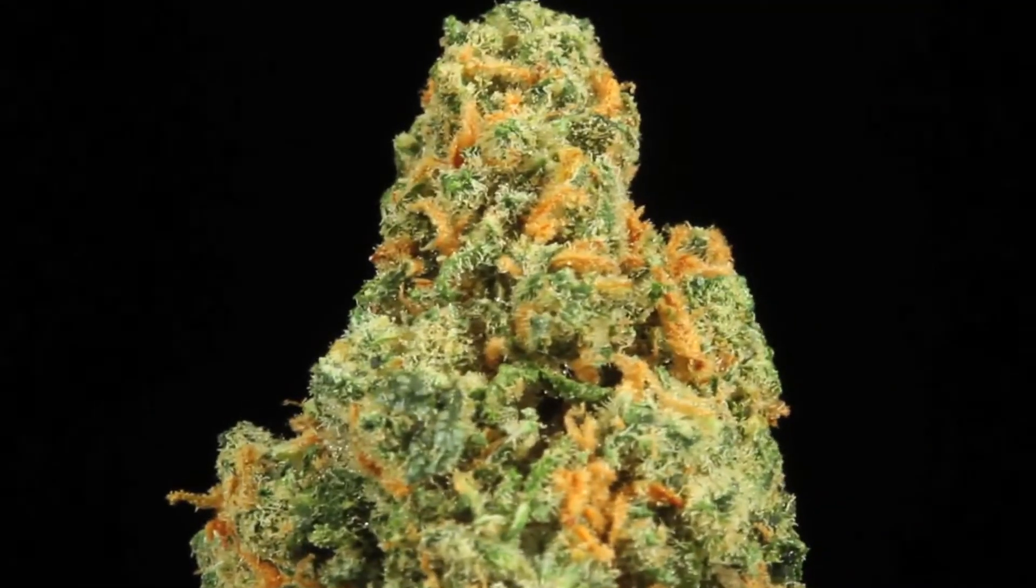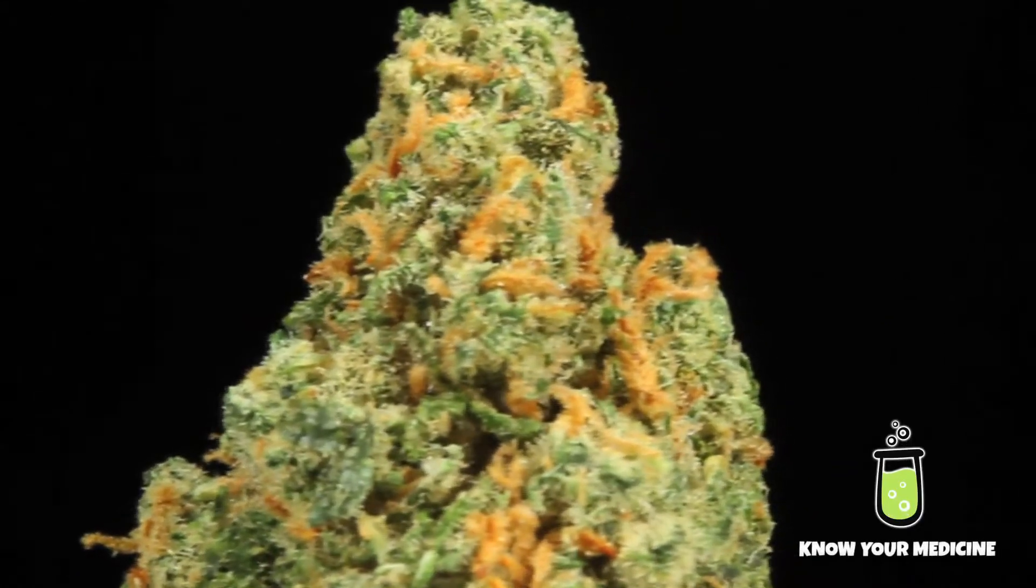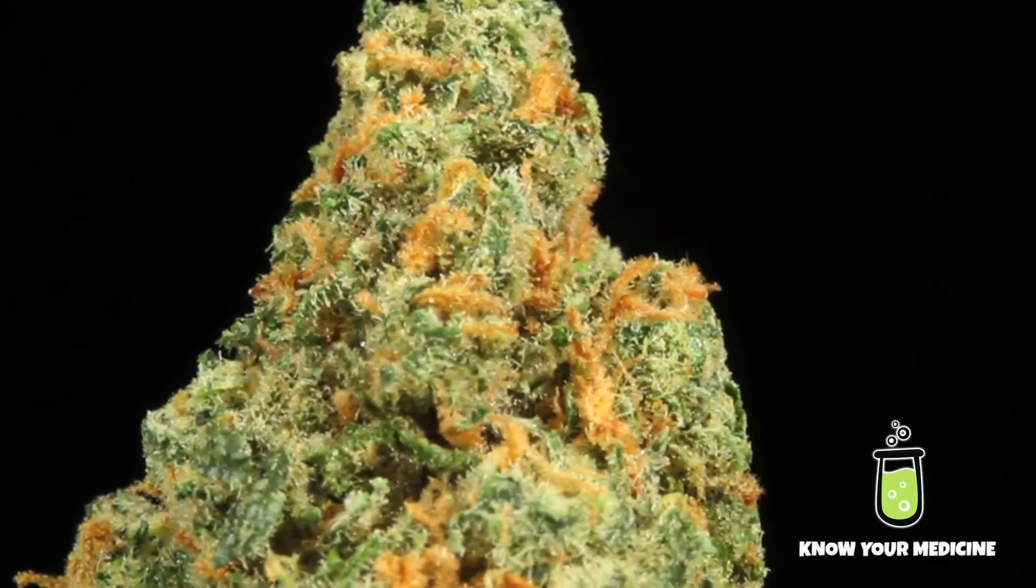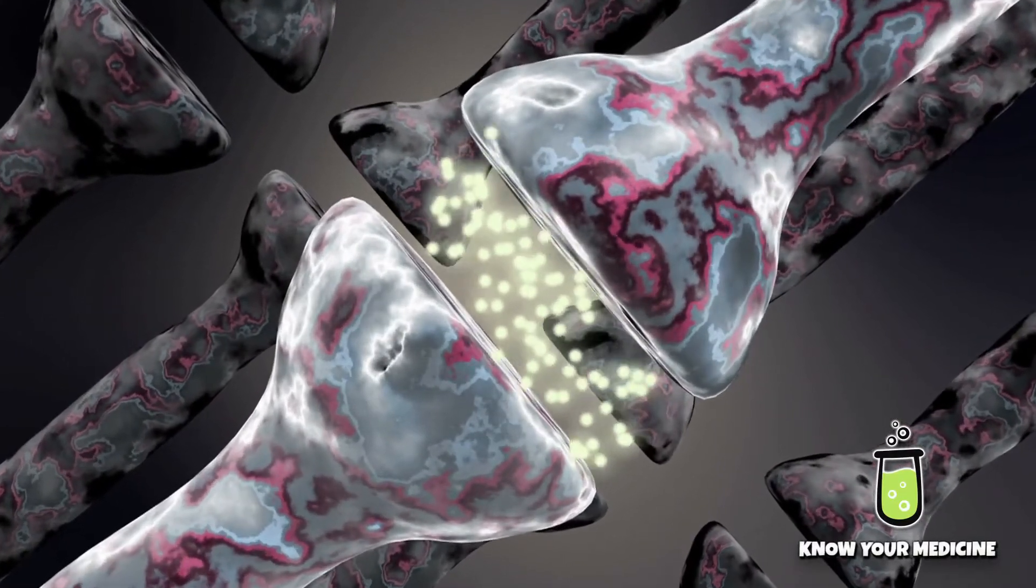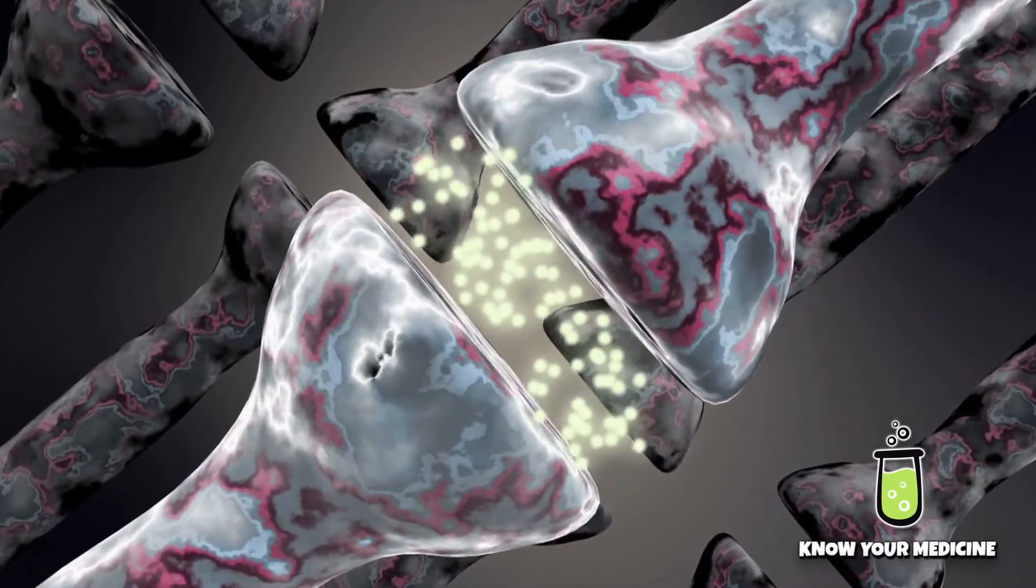The terpenoids on their own have been found to have different medical benefits. For example, beta-caryophyllene is one of the few non-cannabinoids known to actually activate the CB2 receptor. It's also known as an anti-inflammatory.